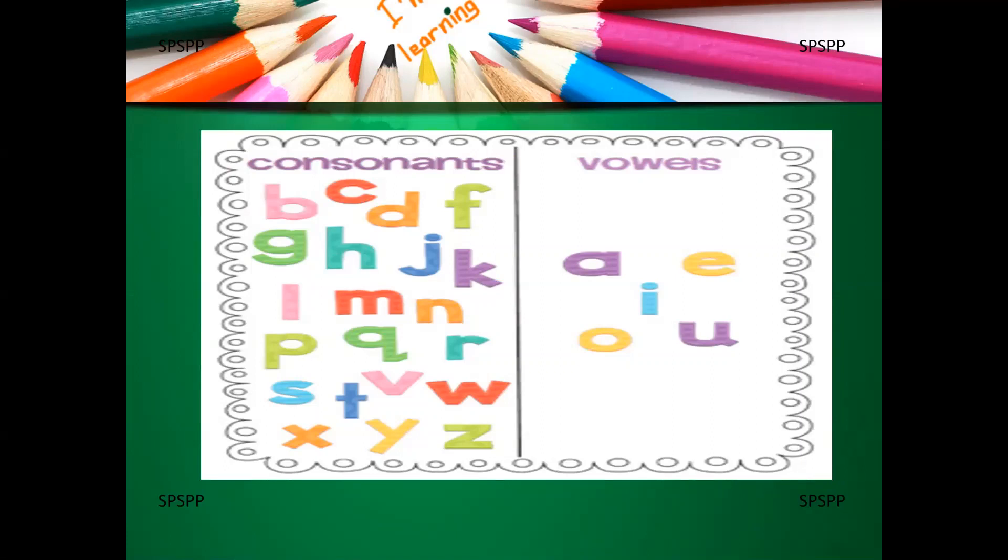There are 26 letters in English alphabet out of which 5 are special. A, E, I, O, U. These 5 letters are called vowels. Rest, all the letters are called consonants.